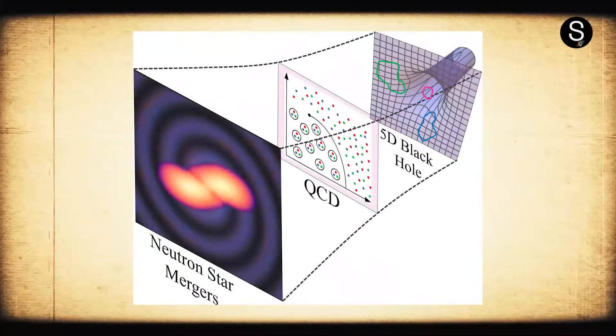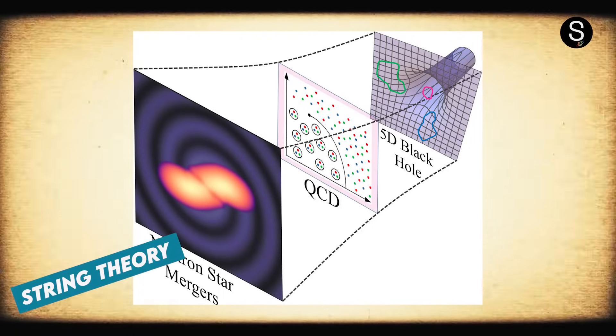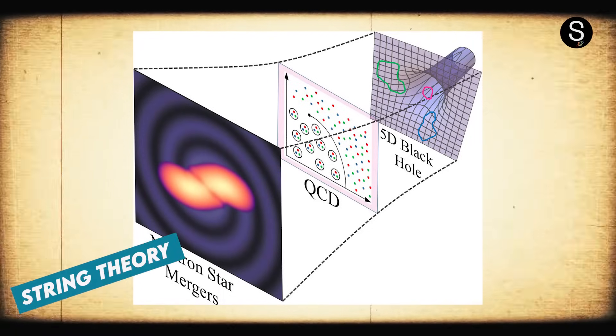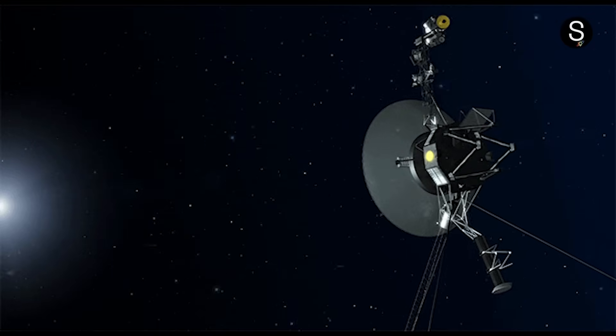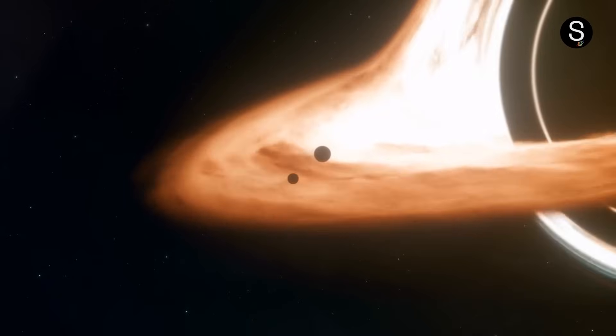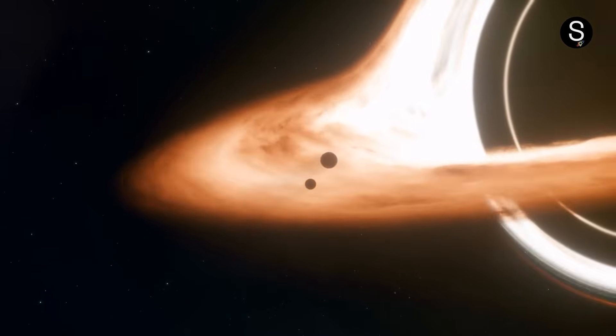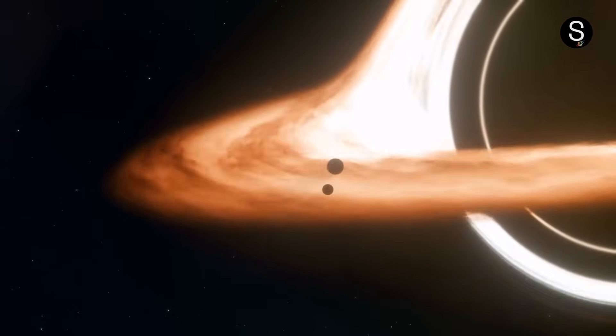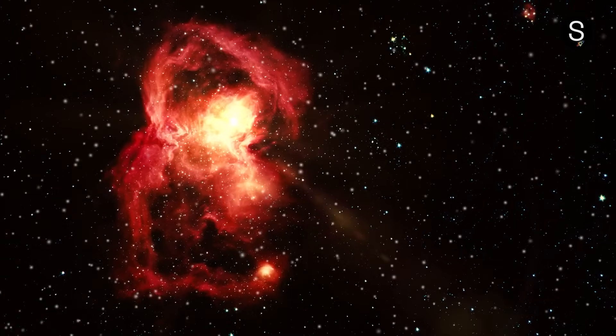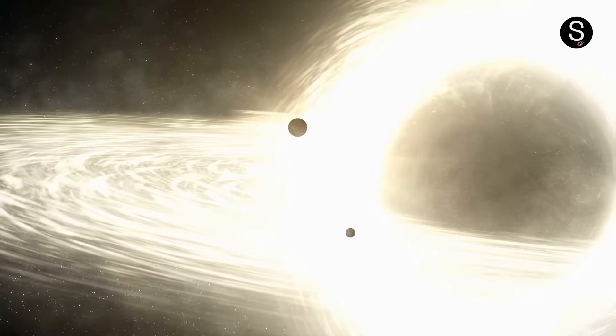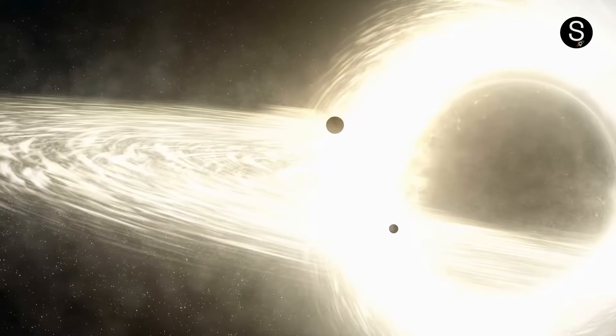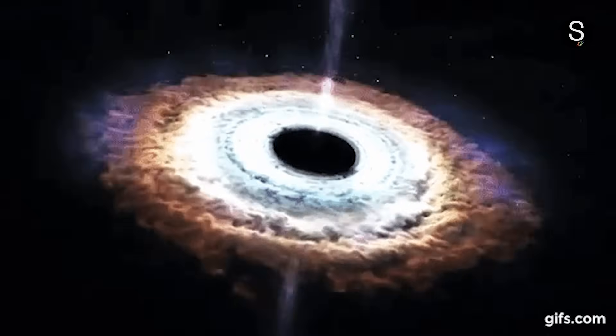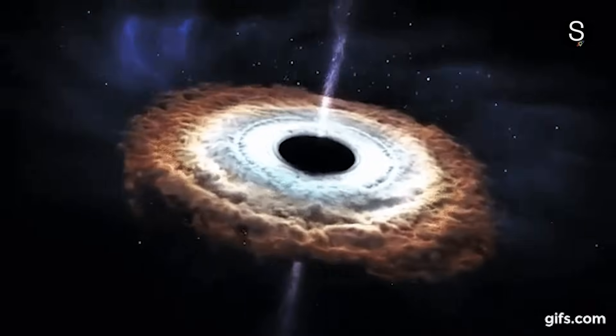Hawking's research on black holes encouraged the development of string theory, which seeks to reconcile general relativity with quantum mechanics. The discoveries of Voyager 1 and Stephen Hawking have had a huge impact on our understanding of black holes and the cosmos as a whole. They have challenged our assumptions, resulting in new discoveries and ideas. We now know that black holes are more than just weird phenomena that consume everything in their path. They also emit radiation and interact with the matter around them.